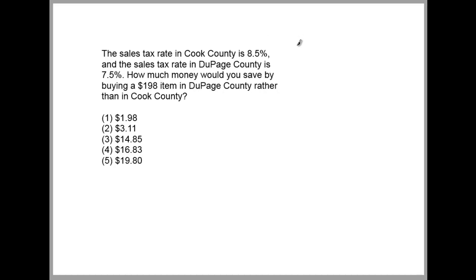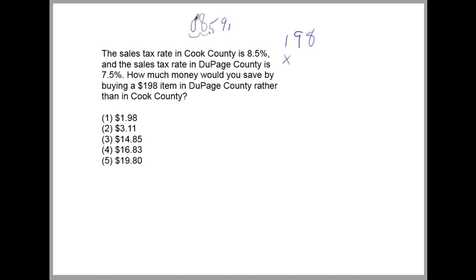Cook County will be $198 times 8.5%. Before you do that, it's easier if you change the percent to a decimal. To change a percent to a decimal, take 8.5% and move the decimal two spaces to the left, adding however many zeros you need. Get rid of the percent sign, so it becomes 0.085.